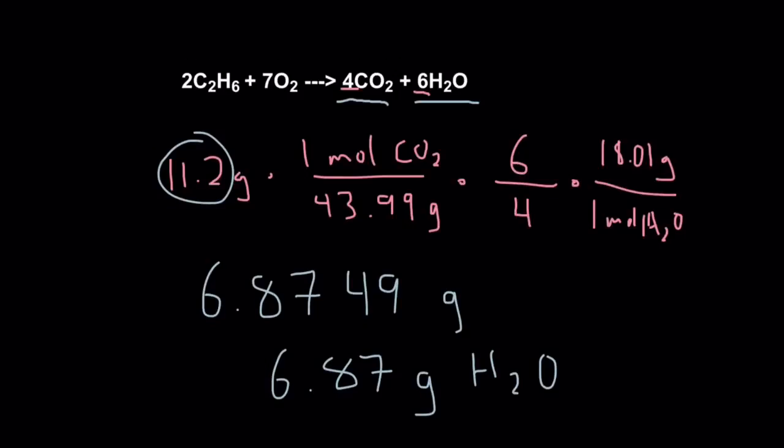So, in the combustion of ethane, if 11.2 grams of CO2 are produced, we now know that 6.87 grams of water will also be produced.